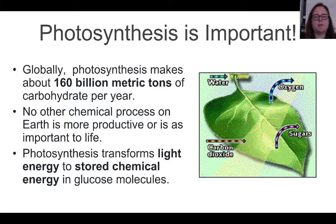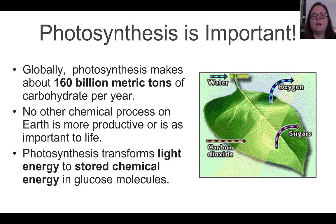Photosynthesis is an extremely important process. Globally, photosynthesis makes about 160 billion metric tons of carbohydrate, or glucose, per year. No other chemical process on Earth is more productive or as important to life. Photosynthesis transforms light energy into stored chemical energy in the form of glucose molecules. We rely on those glucose molecules as our form of energy to make ATP through the process of cellular respiration, which is the energy our cells need to survive. All living things — plants, animals, and other organisms — require glucose in order to survive, so photosynthesis is important to everyone.